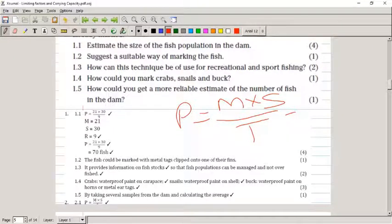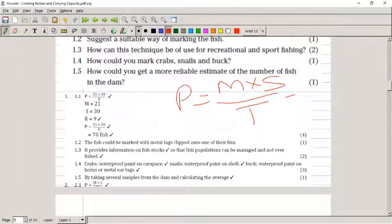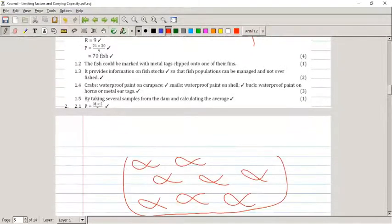I can say to a fisherman, you can catch and keep, or you need to catch and release. What they normally do these days with this type of sport fishing is they have a catch and release policy, but I want to keep stock of how many animals I have in my dam. Next question: how could you mark crabs, snails, or buck? Paint is a good idea. In the case of crabs, a waterproof paint on the shell. Same with snails. And then what we normally do with buck is you would use an ear tag or clipping in the ear. An ear tag is nice because if you use binoculars you can see from quite far away.